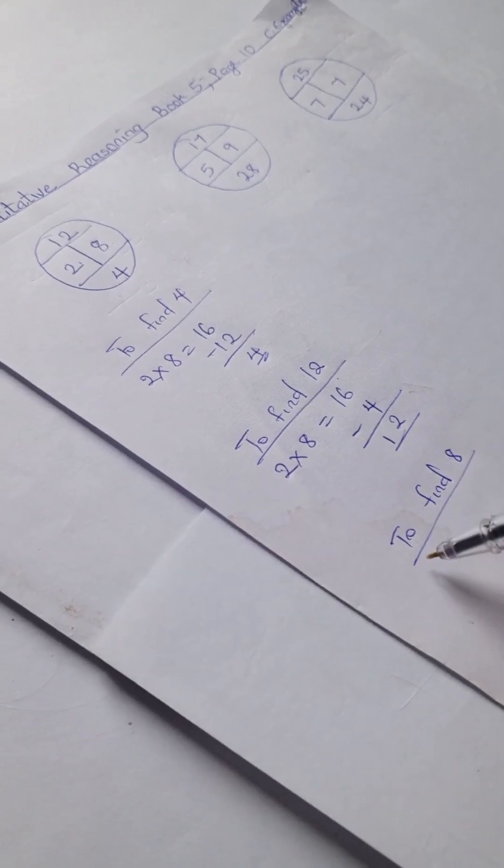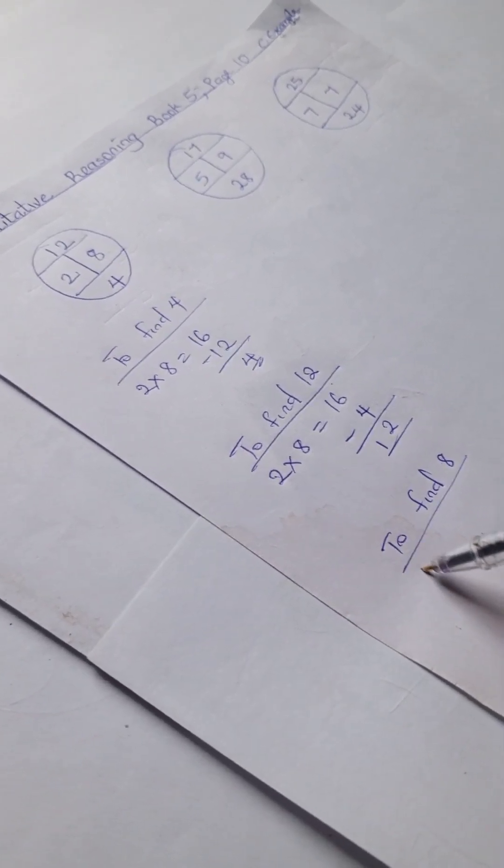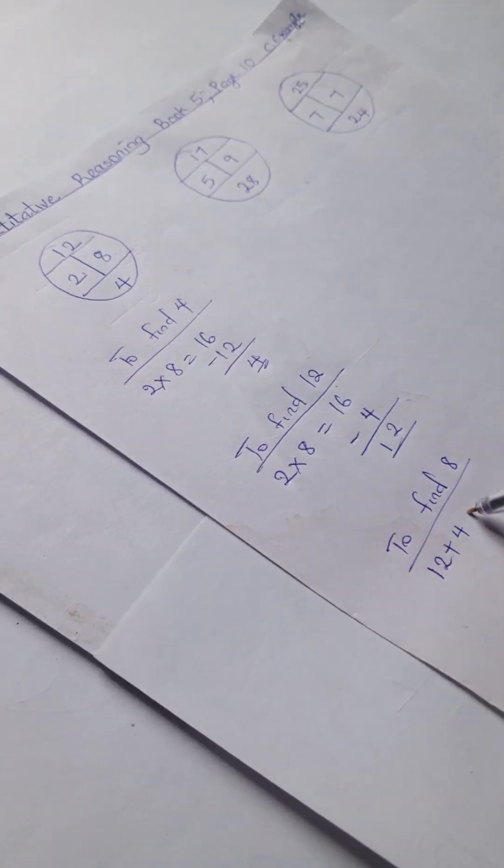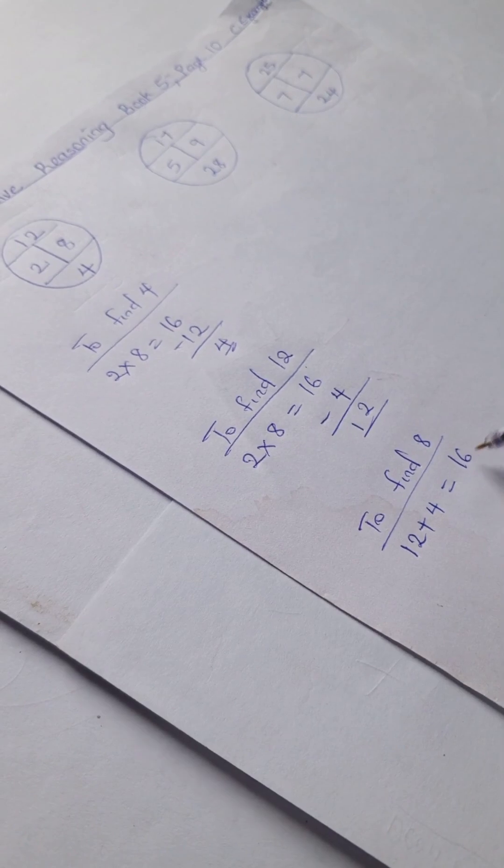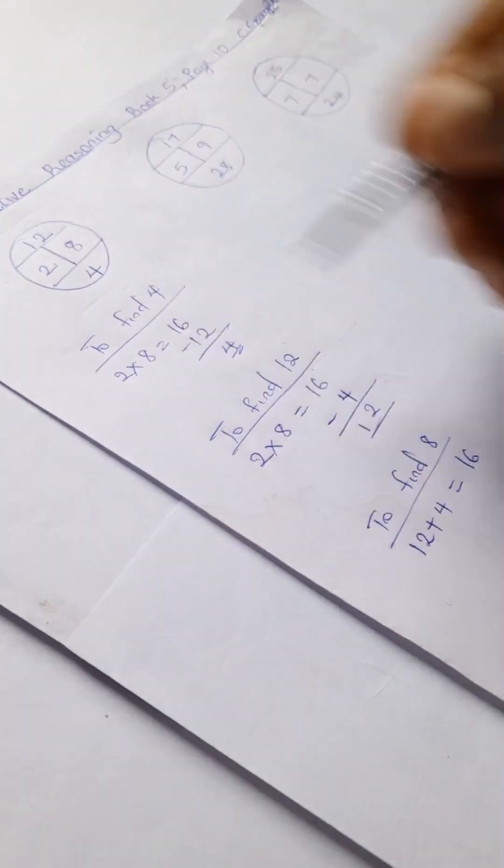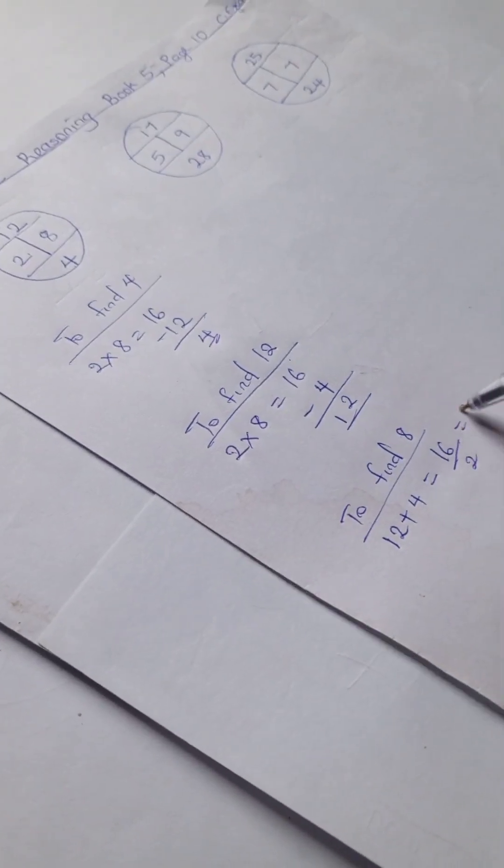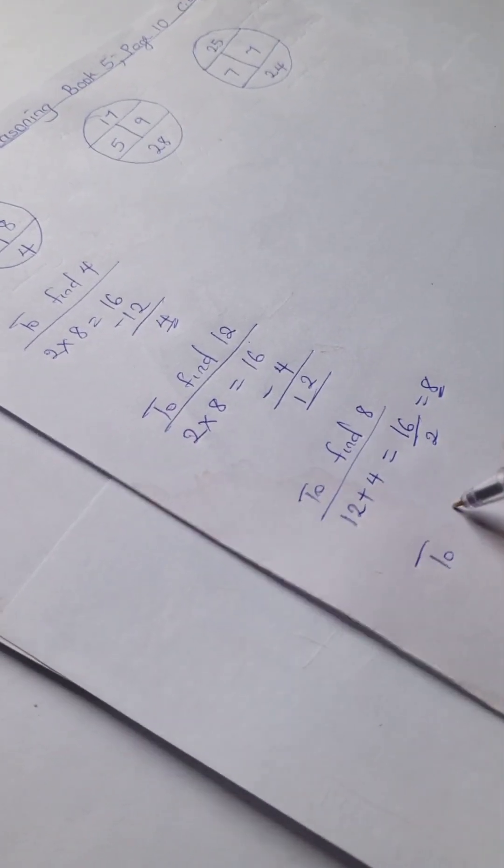And to find 8, we have 12 plus 4 equals 16, and 16 divided by 2 equals 8.